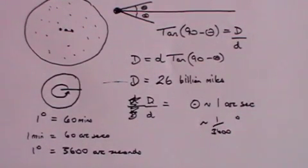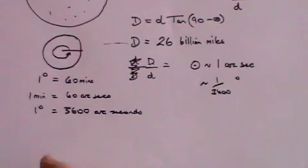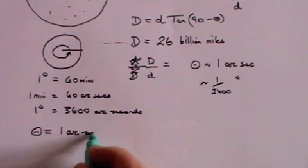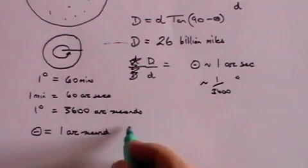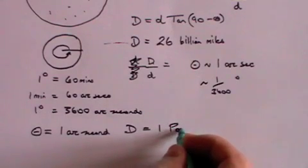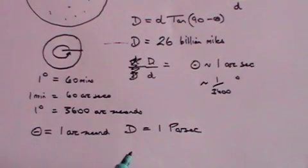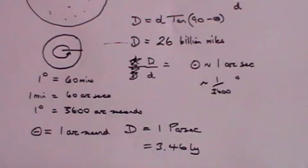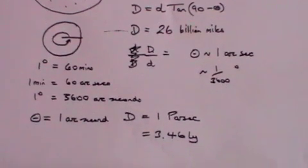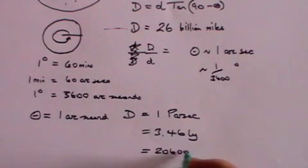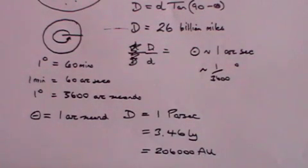Astronomers came up with a new unit of measurement. They said that when the angle theta is exactly equal to one arc second, then the distance D is what they called one parsec, and that is very roughly equal to 3.26 light years, which is also equal to approximately 206,000 astronomical units.